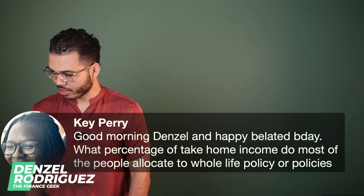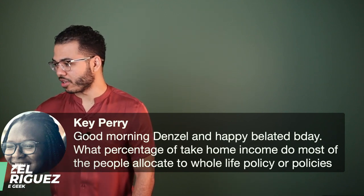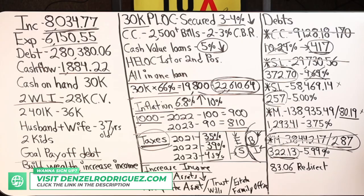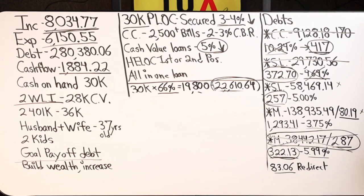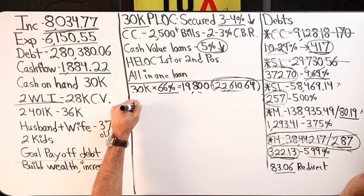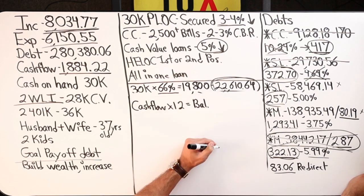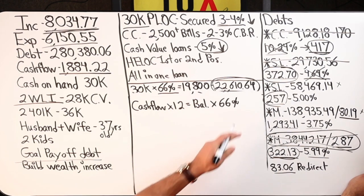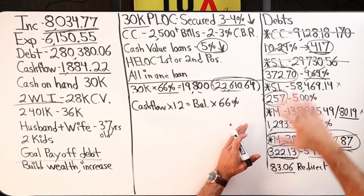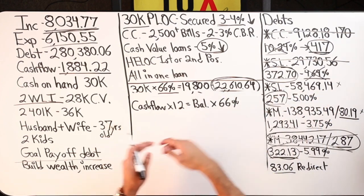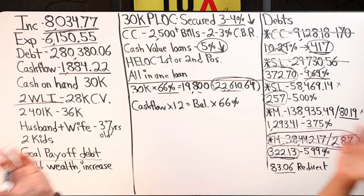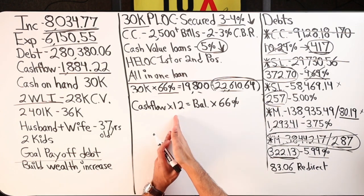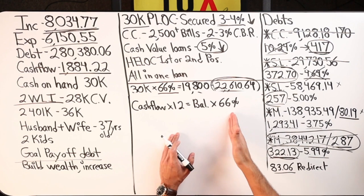What percentage of take-home income do most people allocate to whole life policies? Typically, whatever cash flow is times 12 equals your annual balance. I take that number and multiply it by 66%, and I tell the client: now that you're debt-free and want to transition from velocity banking to infinite banking, chunking 66% of your cash flow per year is a walk in the park — not hard to do.